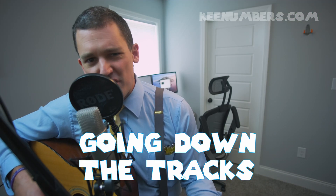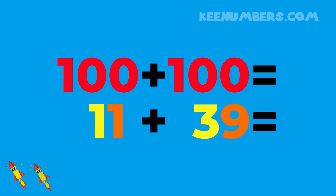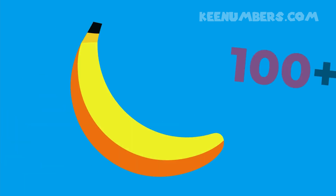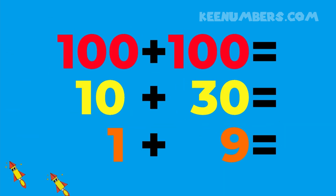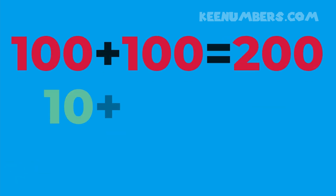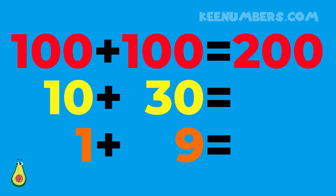We're back to our problem. 100 and 100 — we can compare those because we're talking about hundreds. And we're going to do the same with the 10 and the 30. Banana? What in the world is the banana doing here? We don't need a banana — get out of here, banana. Okay, so 100 and 100, we can compare those. We can compare the 10 and the 30 because those are 10s — one 10 and three 10s. And then we'll compare the 1 and the 9. 1 and 1 make 2, so we're talking about two hundreds, or 200. 100 plus 100 is 200.